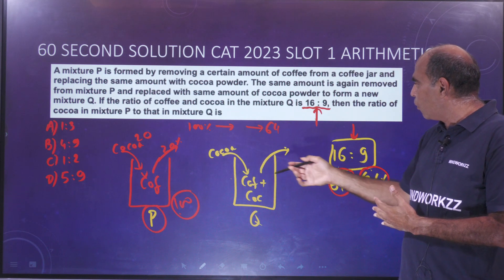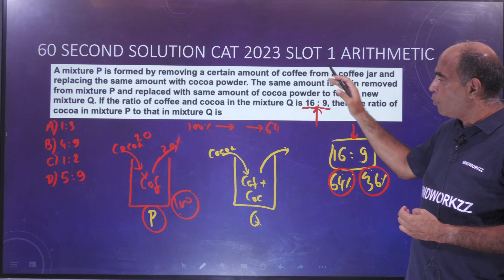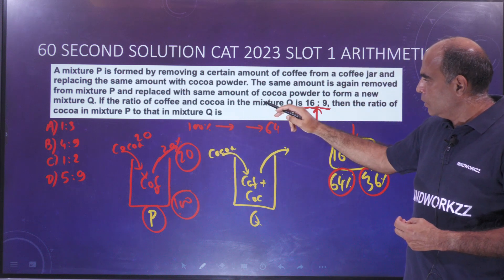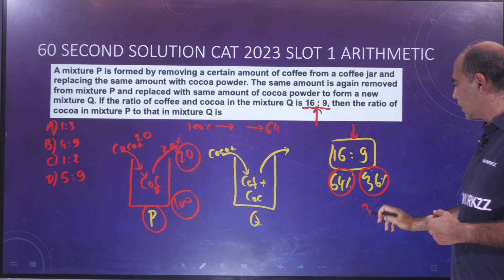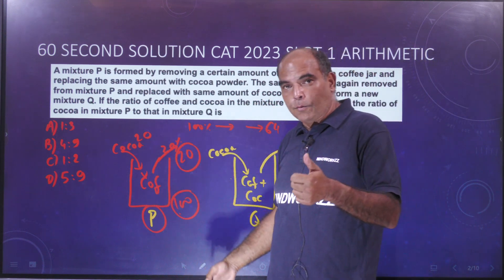The question being asked is ratio of cocoa in mixture P, 20, to that in mixture Q, 36. 5 is to 9, option B, is the right answer. Thank you so much, follow for more.